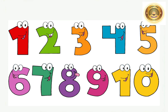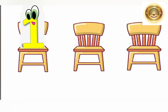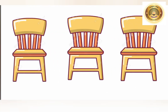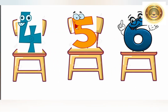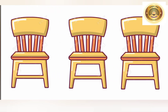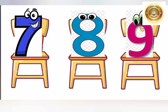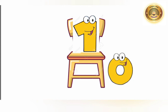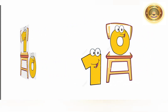When his friends came, Bittu asked them to sit. All the numbers sat on the chairs: 1, 2, 3, 4, 5, 6, 7, 8, 9. When it was number 10's turn, number 10 was not able to sit on the chair. When 1 tried to sit, 0 would fall. When 0 tried to sit, 1 fell down.